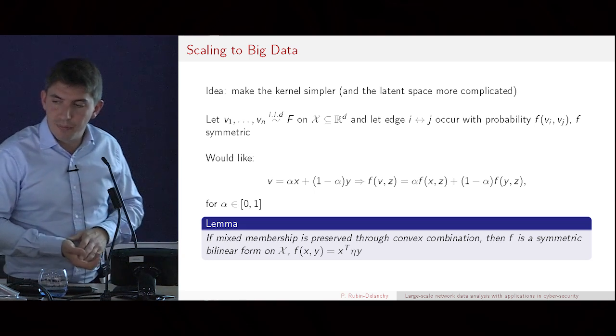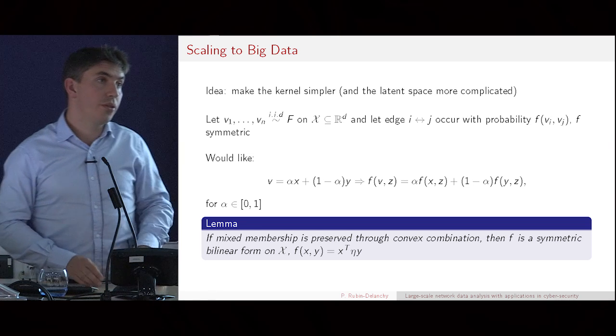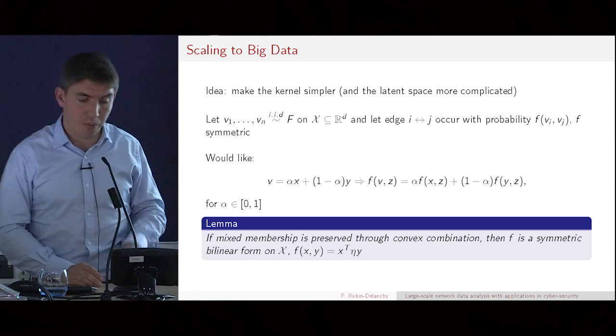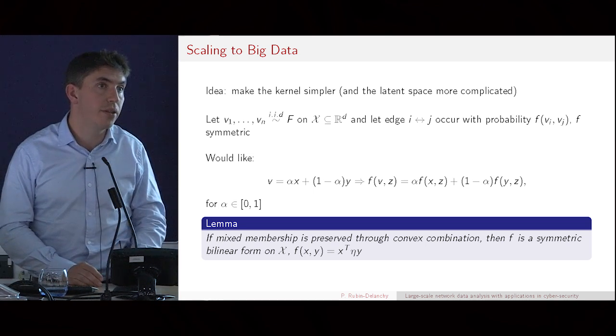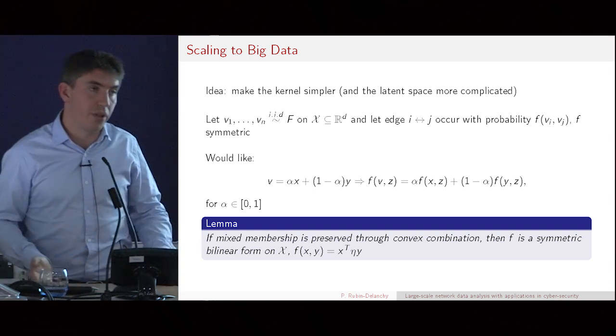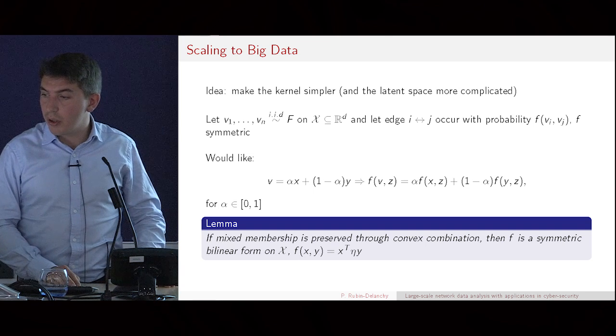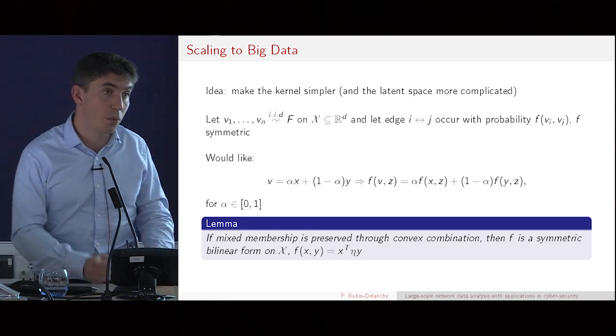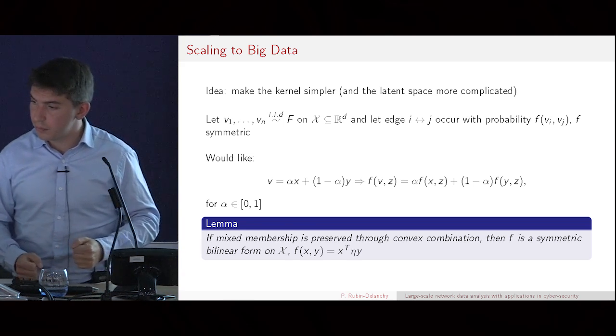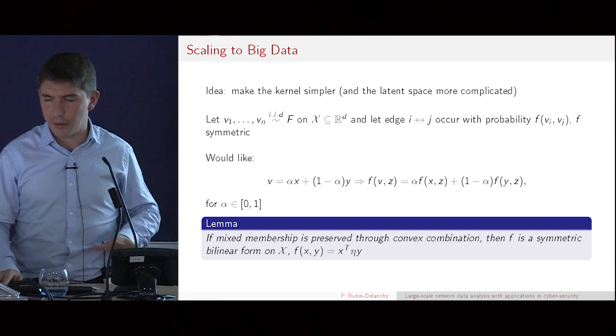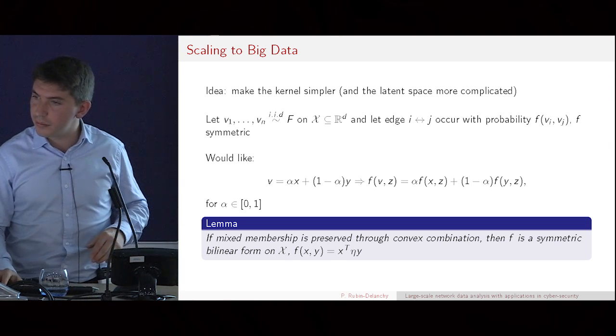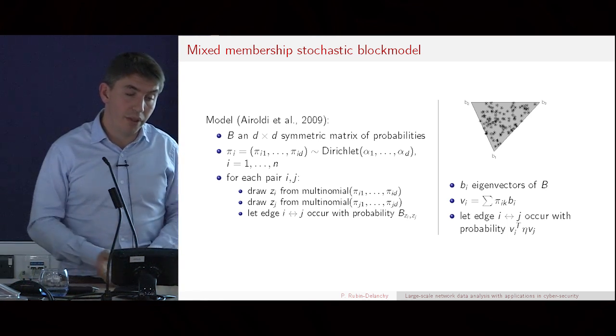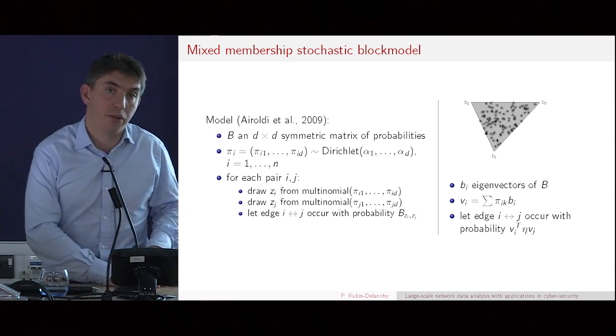Well, it's not a very difficult thing to prove. There's only one choice for the kernel if you want this to be true. And basically there's only one family of choices. And basically it means that F has to be a bilinear, a symmetric bilinear form. And because we're talking finite dimensional stuff, that basically means that the probability of an edge between X and Y has to be X transpose times a matrix times Y. So that's nice. We've kind of made the search space a bit simpler. And I'll simply mention that a very popular model called a mixed membership stochastic block model is actually just a special case of this.